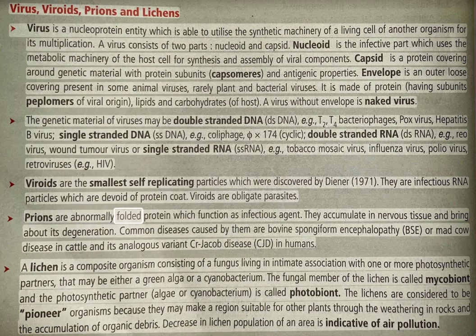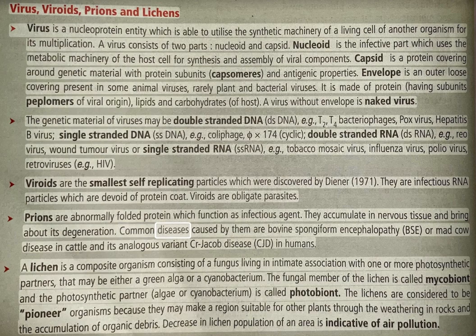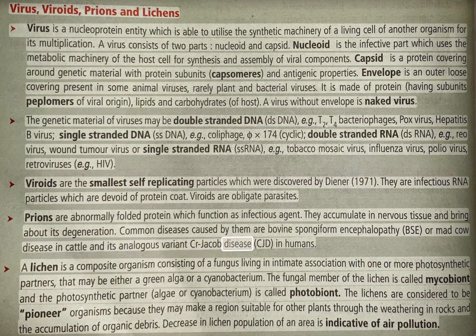Prions are abnormally folded proteins which function as infectious agents. They accumulate in nervous tissue and bring about its degeneration. Common diseases caused by them are bovine spongiform encephalopathy (BSE), or mad cow disease in cattle, and its analogous variant Creutzfeldt-Jakob disease (CJD) in humans.